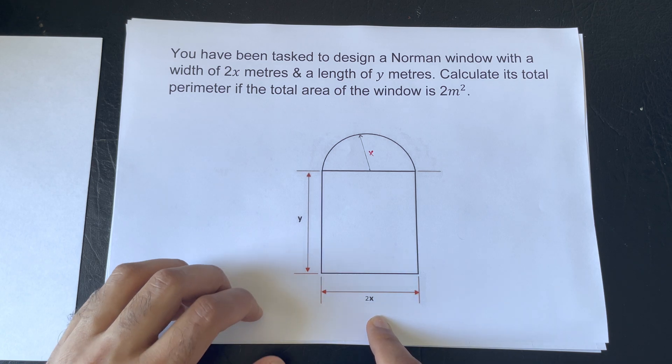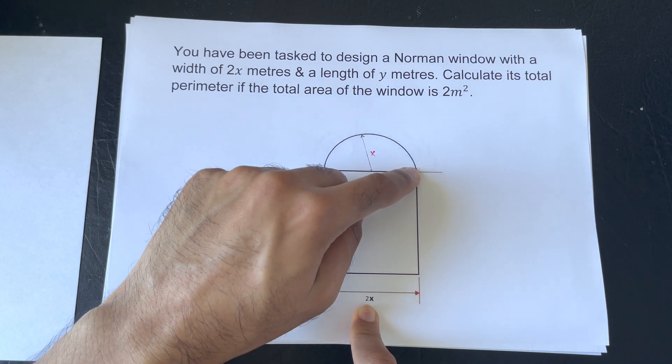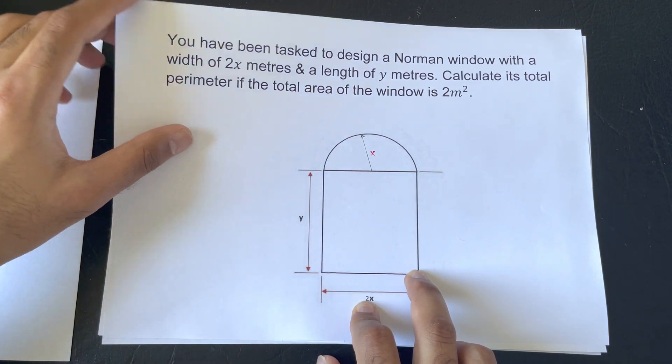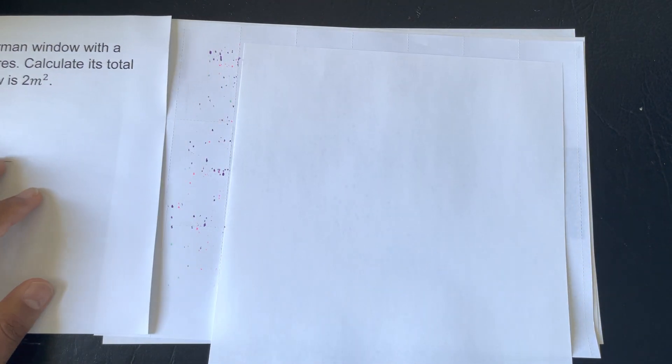So, just quickly looking at it, you've got 2x, you'll be having 2y, and the length of the semicircle. Now, that being said, that is step 2 complete.